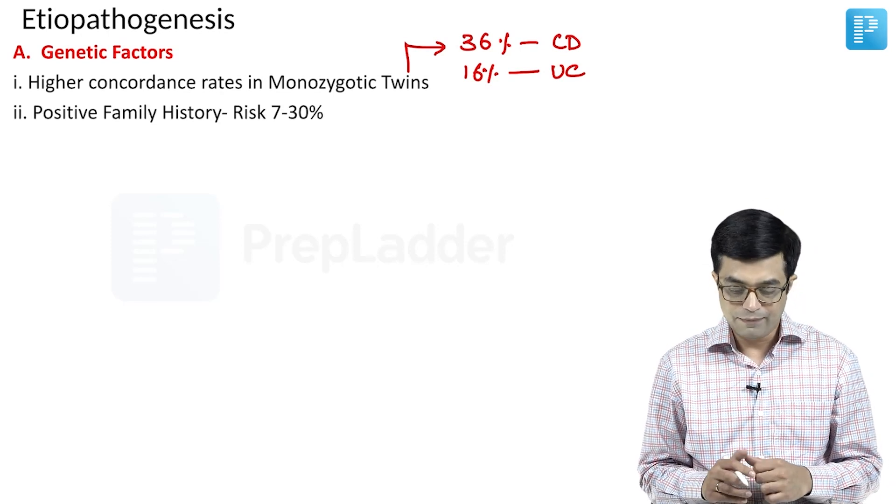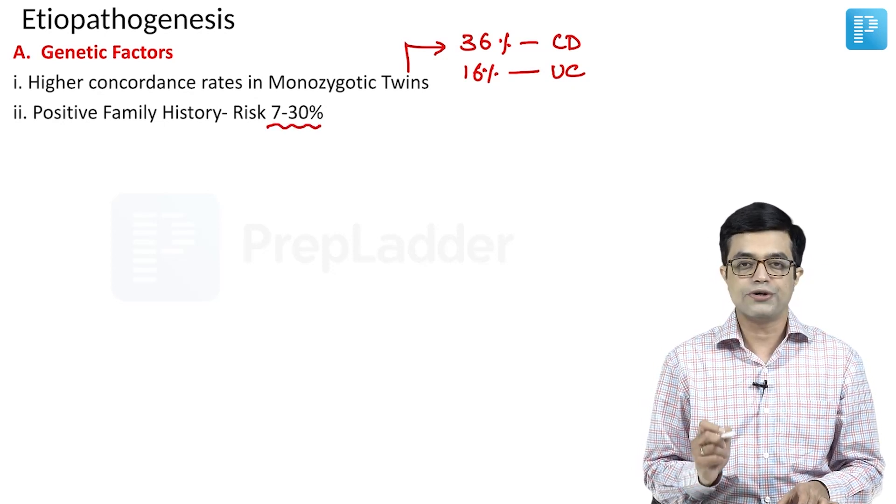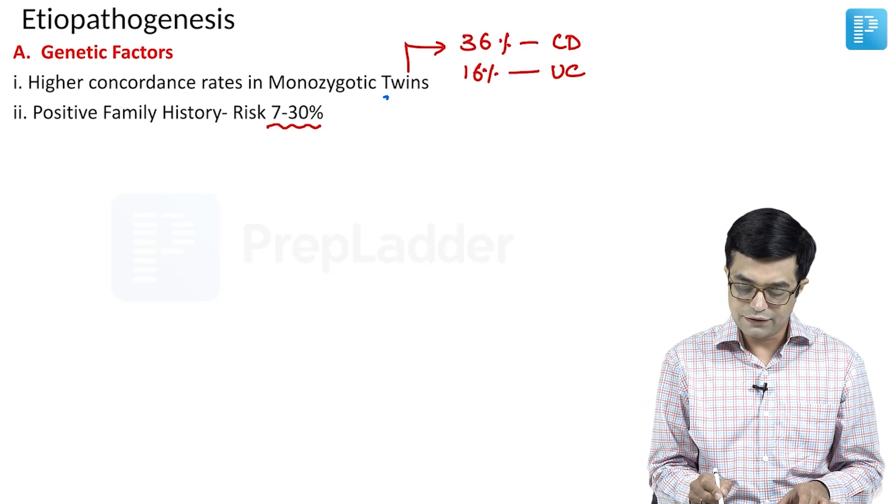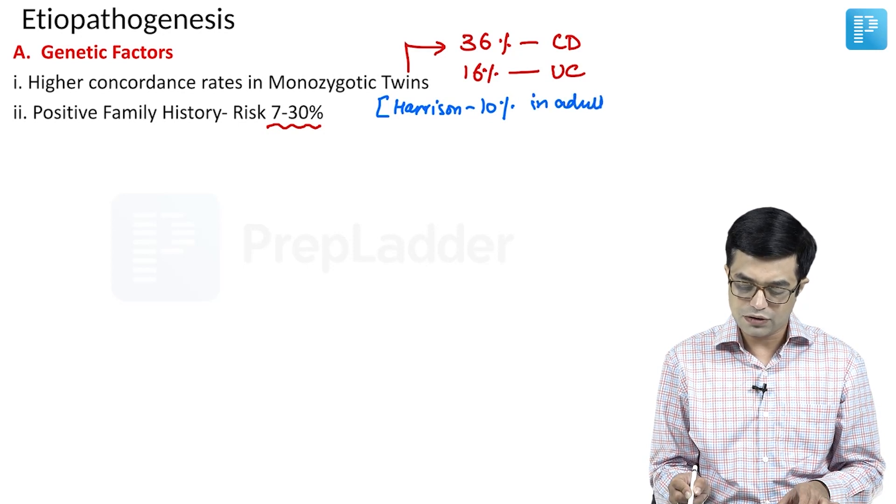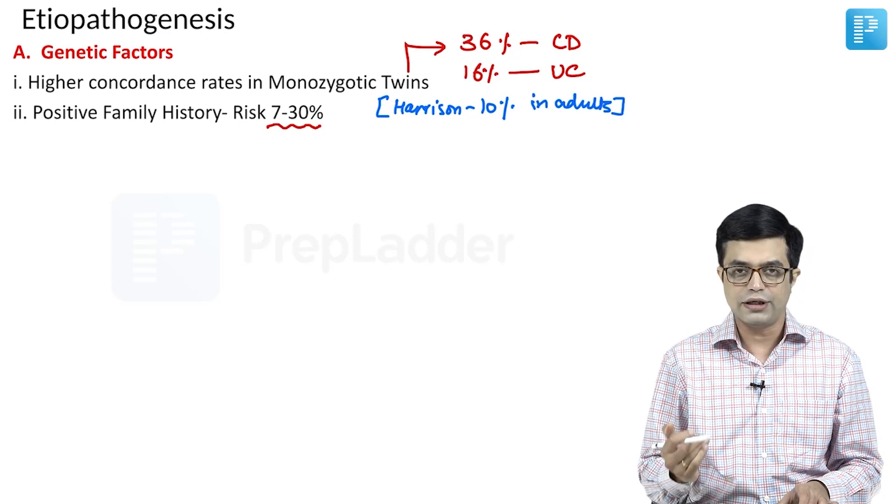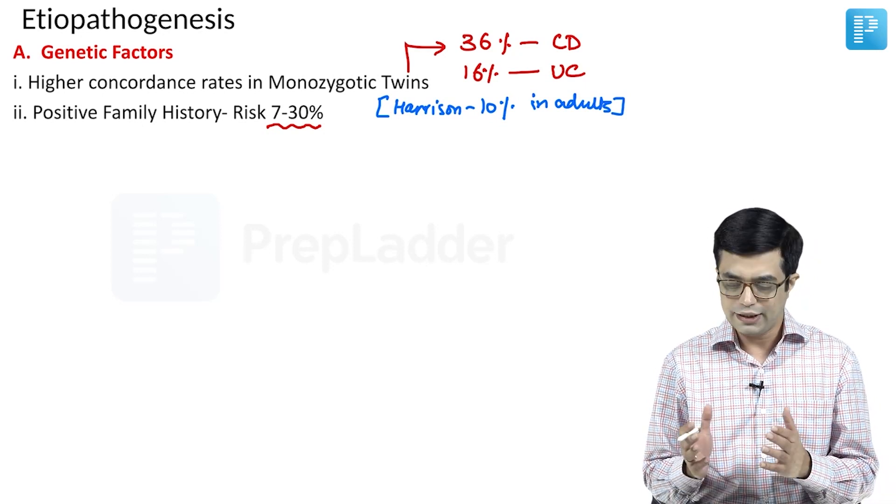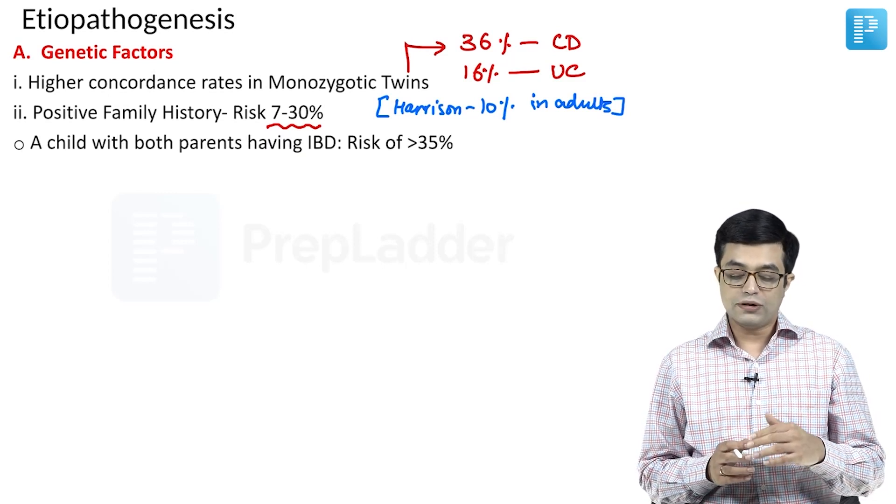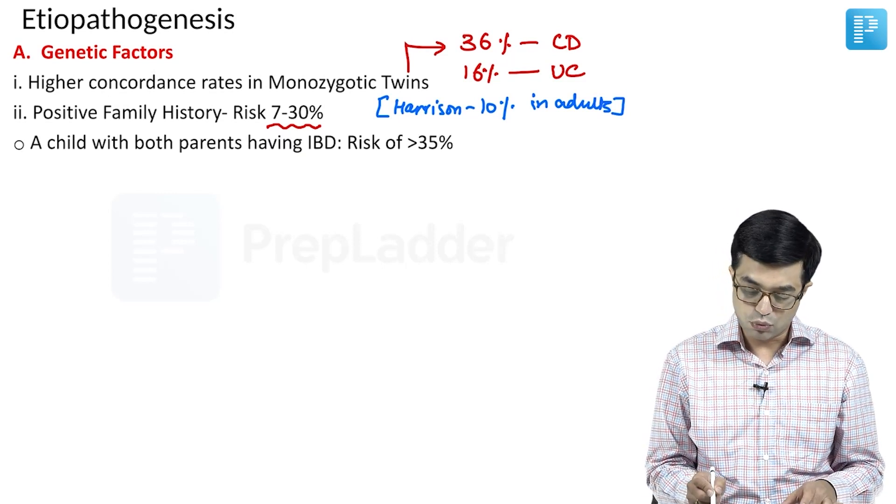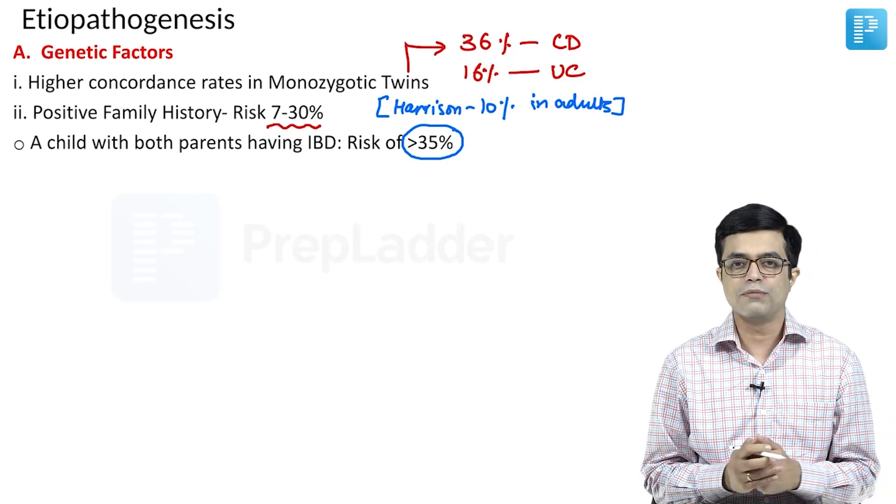Second is positive family history. The risk varies between 7 to 30% in the children according to Nelson whereas Harrison gives a range of about 10% in case of adults. So, 10% also lies within the same range. In children, positive family history association is 7 to 30%. In case of adults according to Harrison 20th edition it is 10%. A child who has both parents having IBD, the risk is more than 35%. Harrison gives a value of 36%.